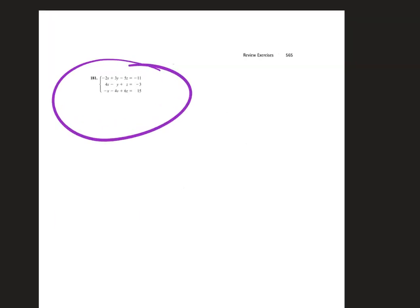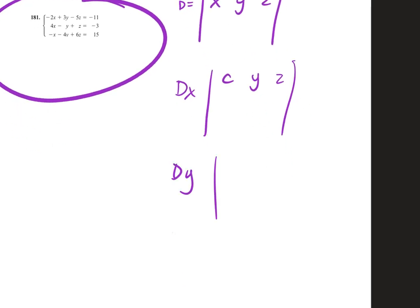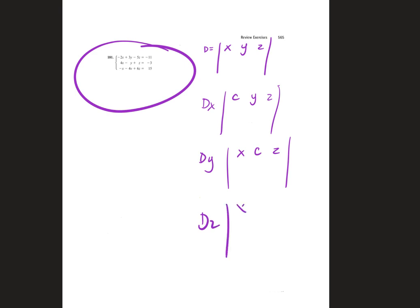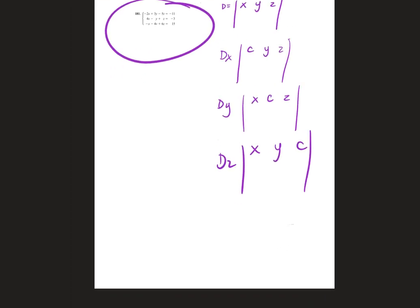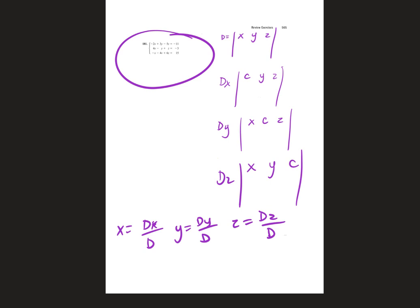Cramer's rule is the other question worth double the points. You find D using the coefficients. For D of X, replace the X column with the constants. For D of Y, replace the Y column with the constants. For D of Z, replace the Z column with the constants. Then X equals D of X over D, Y equals D of Y over D, and Z equals D of Z over D. You must show your work to receive credit for this question — those specific instructions require it.